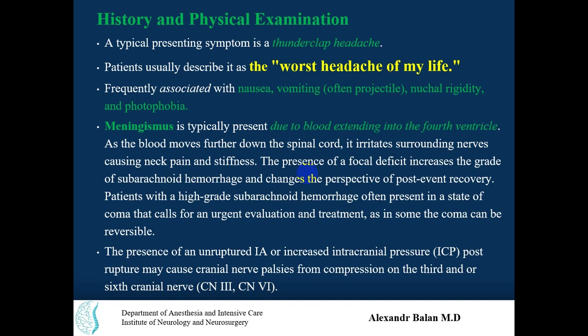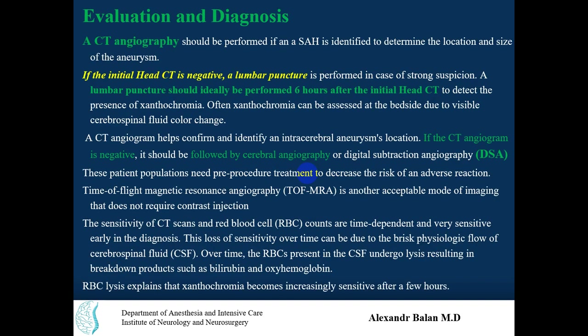The classic symptom is a thunderclap headache, or the worst headache of my life as described by patients. It is frequently associated with nausea, vomiting (often projectile), nuchal rigidity, and photophobia, meaning patients avoid light due to headache. Meningismus is typically present due to blood extending into the fourth ventricle. CT and angiography should be performed if SAH is identified to determine the location and size of the aneurysm.